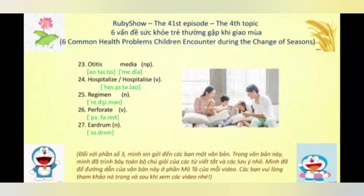Từ số 26, chúng ta có động từ là 'perforate,' nhấn âm 1. Động từ này có 3 nghĩa: nghĩa số 1 là đục lỗ hoặc khoan hoặc đục thủng; nghĩa số 2 là đục hoặc tạo răng cưa; và nghĩa số 3 là xuyên vào hoặc xuyên qua. Trong phần 2 thì mình đọc từ này chưa chính xác lắm, mình xin đọc lại cho chính xác là 'perforate,' nhấn âm 1.